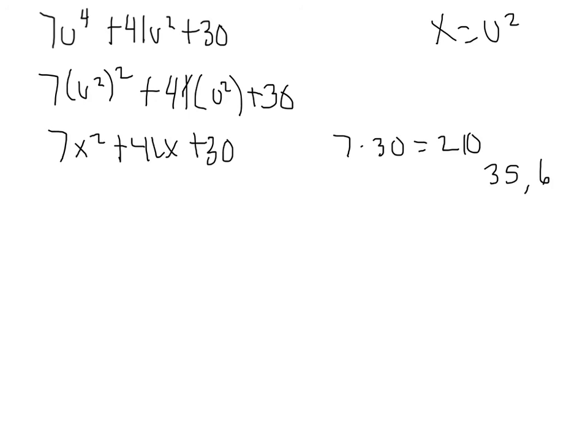So you can put those into your equation. 7x squared plus 35x plus 6x plus 30. And then you can group them.